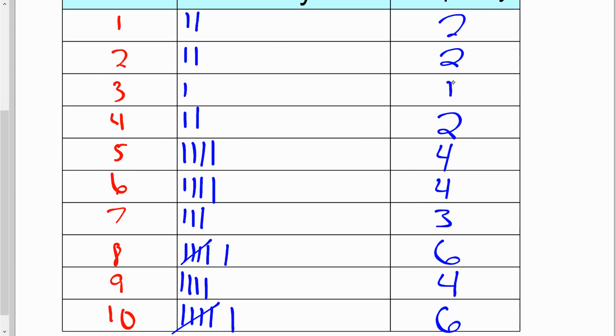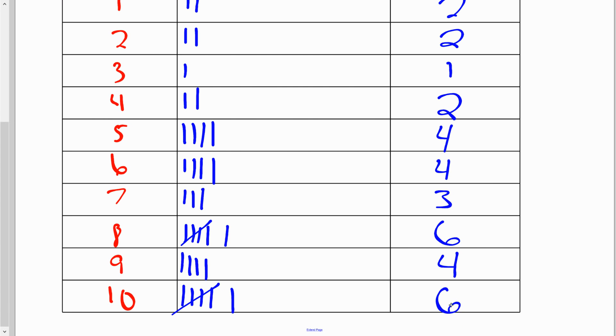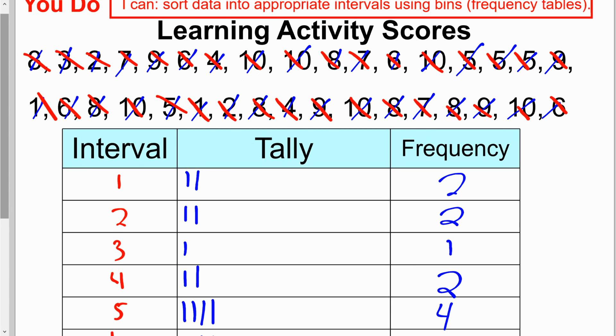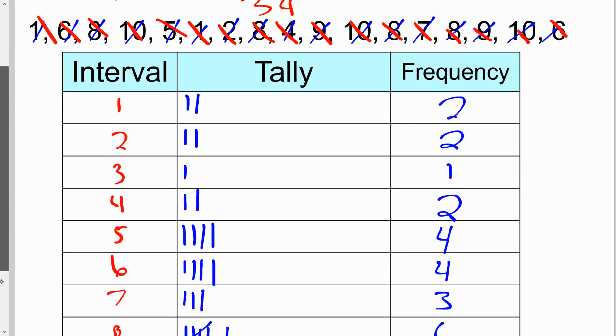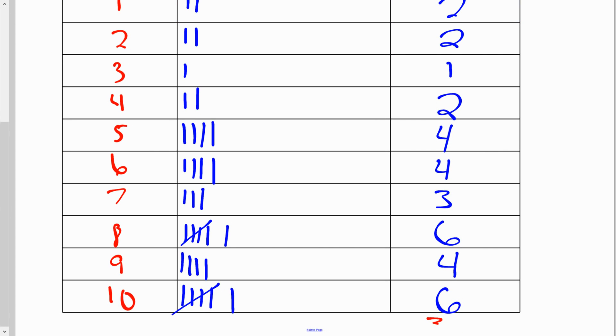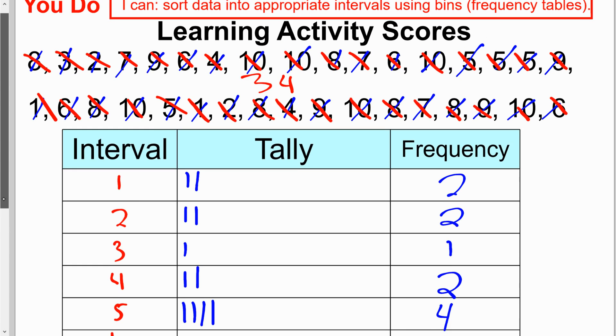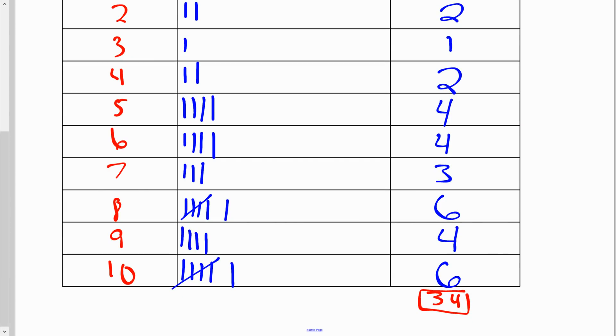If I add all these up, I should get 34. So 2 plus 2 is 4, plus 1 is 5, plus 2 is 7, plus 4 is 11, plus 4 is 15, plus 3 is 18, plus 6 is 24, plus 4 is 28, plus 6 is 34. And that's exactly what I needed. So I got 34 pieces of data up here. And when we add this column up, we also get a total of 34. And that kind of helps me confirm that I've got all my data in my table.